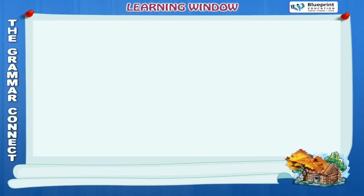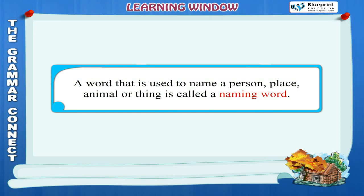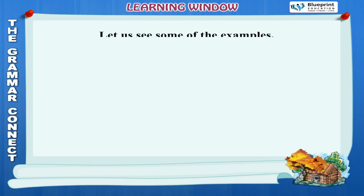A word that is used to name a person, place, animal or thing is called a naming word. Let us see some of the examples.